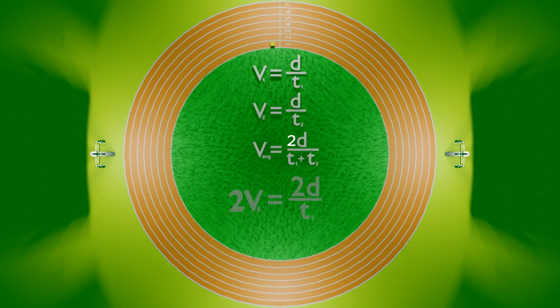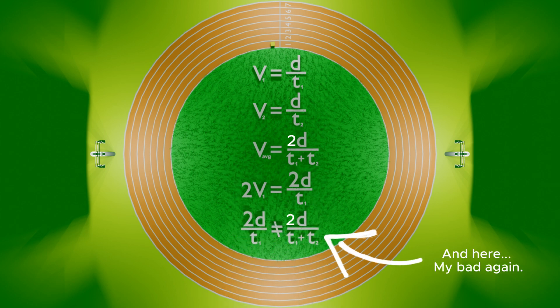Two times the speed of your first lap is equal to two times the distance around the track divided by T1. We want to make your average speed equal two times the speed of your first lap, and substituting these equations in quickly shows that these two expressions can only be equal if T2 equals zero, which is impossible.